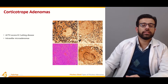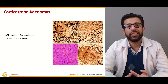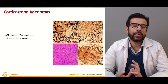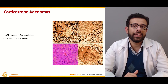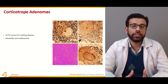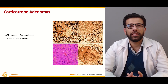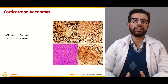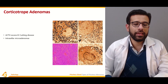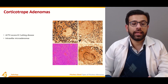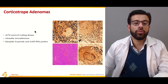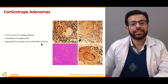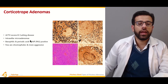In corticotroph adenomas, the corticotroph cells secrete ACTH. Excess ACTH leads to Cushing's disease. Patients with Cushing's disease present with central obesity, abdominal striae, and the characteristic moon face. These are typically intracellular microadenomas that are basophilic and periodic acid-Schiff (PAS) positive.